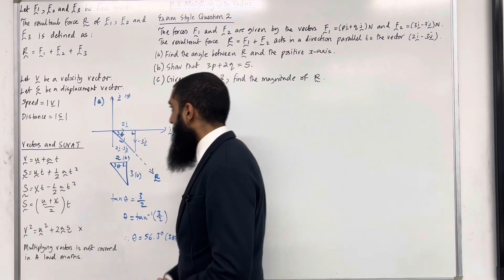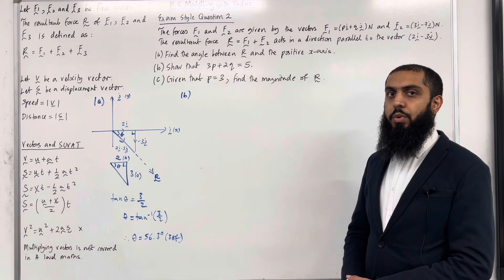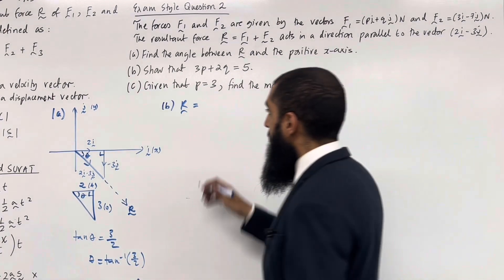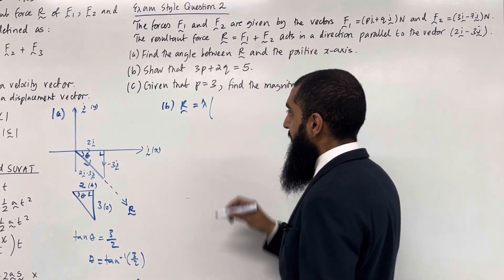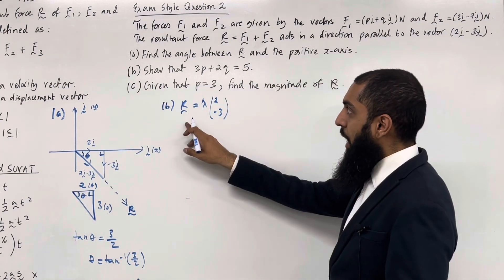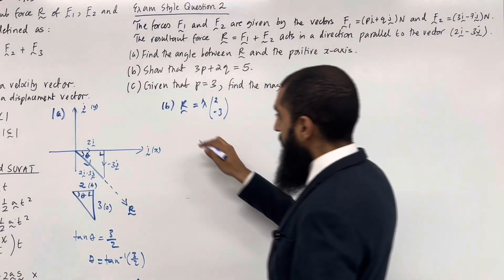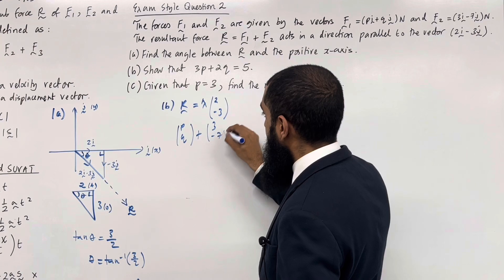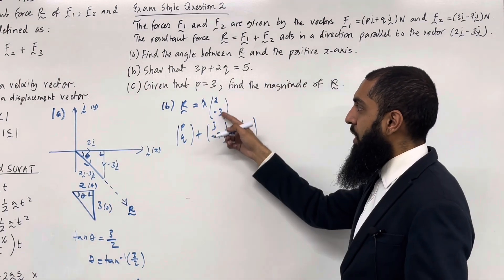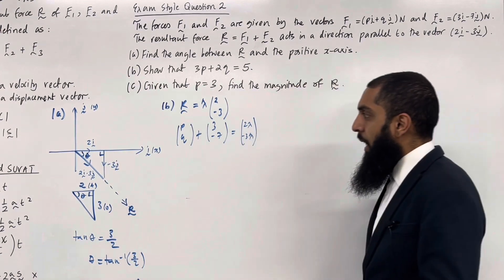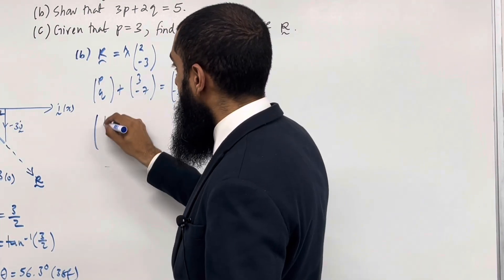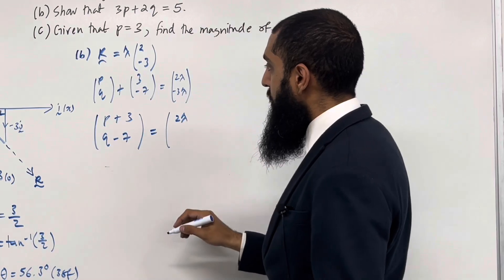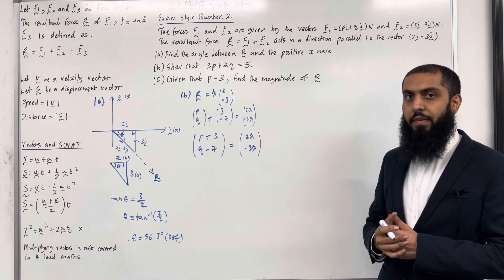Moving on to part B: show that 3p plus 2q equals 5. Since R acts parallel to 2i minus 3j, R must equal lambda times (2i minus 3j), written as column vector (2λ, −3λ). The resultant R equals F1 plus F2, so (p, q) plus (3, −7) equals (2λ, −3λ). Adding the column vectors gives (p+3, q−7) equals (2λ, −3λ). Since the vectors are equal, we can generate two equations by comparing components.